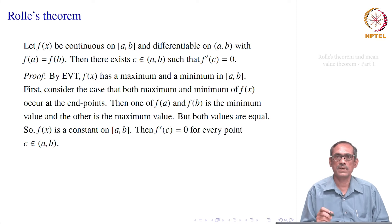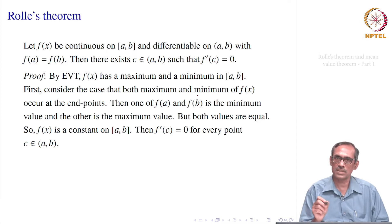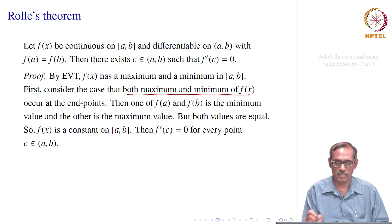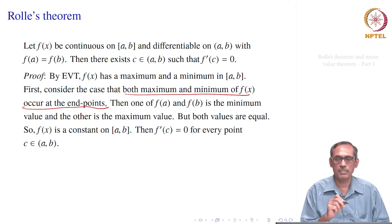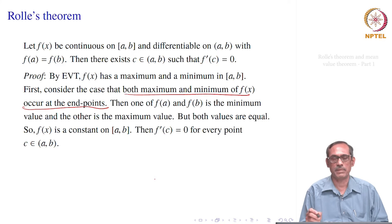The proof uses our notion of maximum and minimum. By the extreme value theorem, since f is continuous on the closed interval [a, b], there is a point where f achieves its maximum and a point where it achieves its minimum. Now consider the first case: both maximum and minimum occur at the end points.